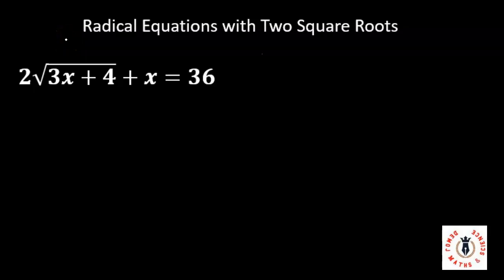In this lesson we'll see how to solve radical equations with two squares. But first let's start with solving radical equations with one square. If I have 2 times the root of 3x plus 4 plus x equals 36, I want us to collect like terms.